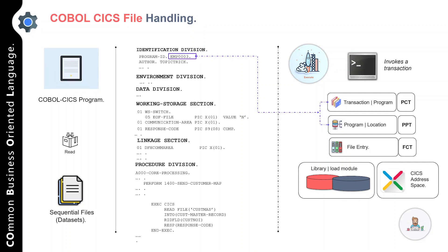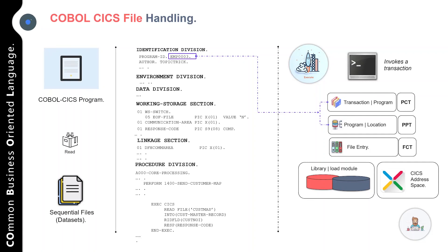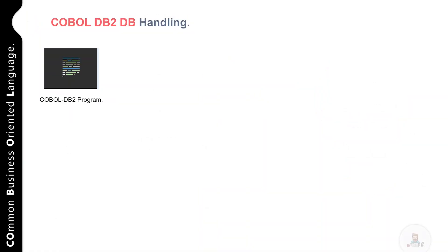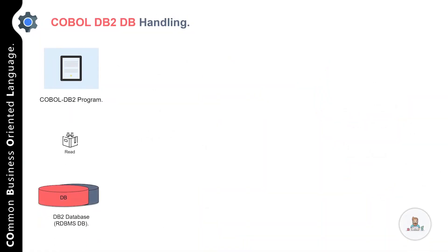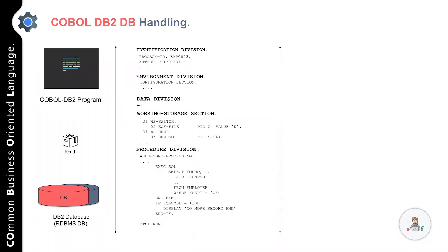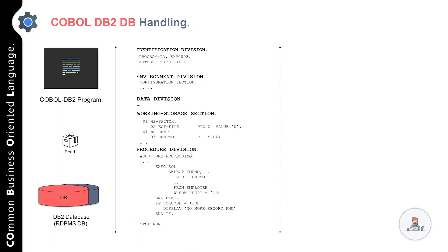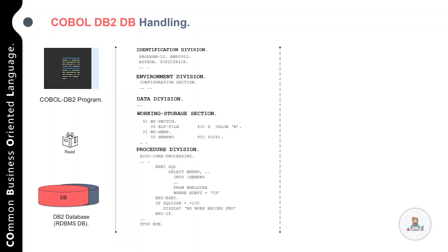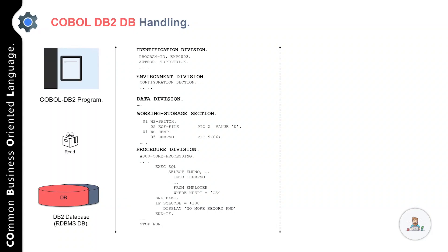Now let's move on to our next example — a COBOL DB2 program — where we are reading data from a DB2 table instead of a file. Again we have four divisions: identification division, environment division, data division, and procedure division. In the environment division and data division we have not specified any file-related details because we are reading data from a DB2 table. If you want to write data to an output file, you would specify the file-related details there.